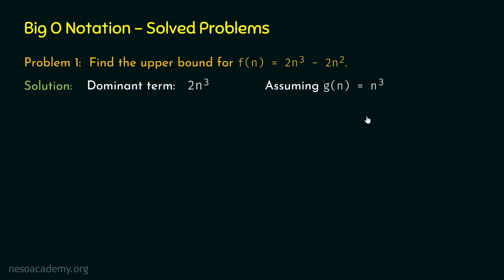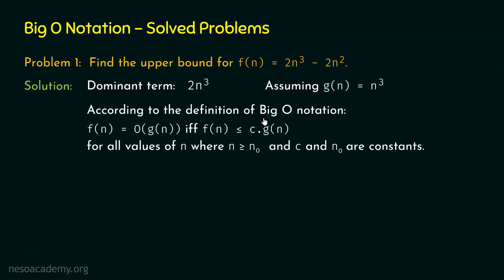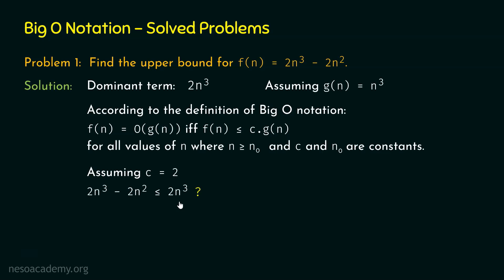Now let's apply step number 3 — we need to apply the Big O definition. According to the definition of Big O notation, f(n) is equal to Big O of g(n) if and only if f(n) is less than or equal to c·g(n) for all values of n where n is greater than or equal to n₀, and c and n₀ are constants. Let's assume c is equal to 2, because it is my intuition that 2n³ will surpass 2n³ minus 2n² at some point, since we are subtracting 2n² from 2n³.